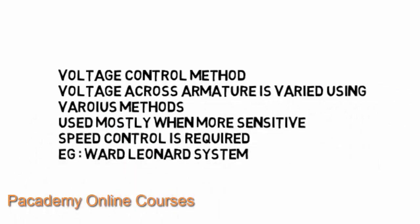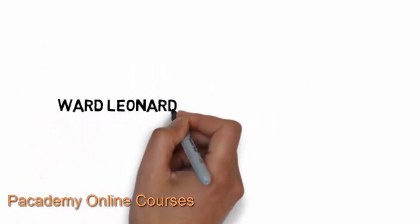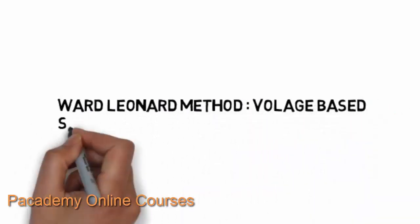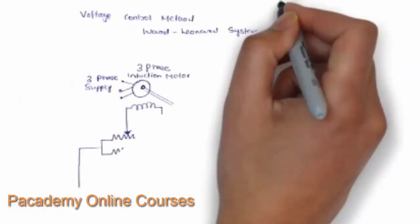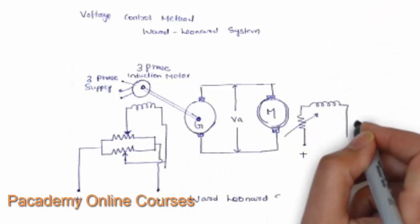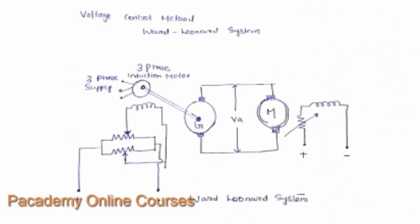There is also a voltage control method, where the voltage across the armature is varied using various techniques — used mostly when more sensitive speed control is required. The Ward-Leonard system is a method of speed control achieved by varying the armature voltage. In the Ward-Leonard system, where fine-tuning of speed control is required, the voltage across the armature is varied at fine levels.